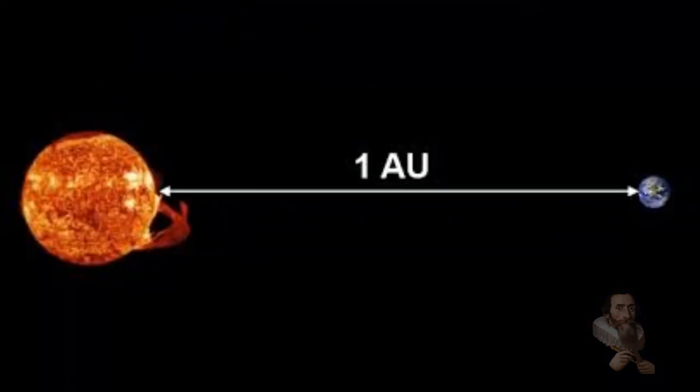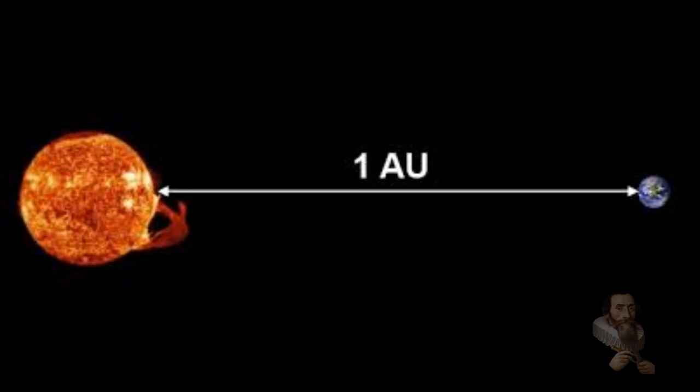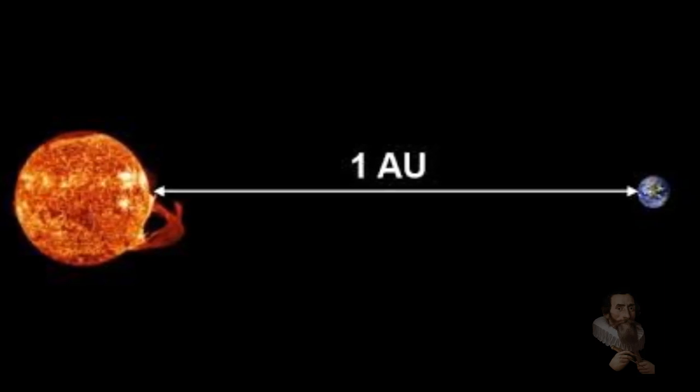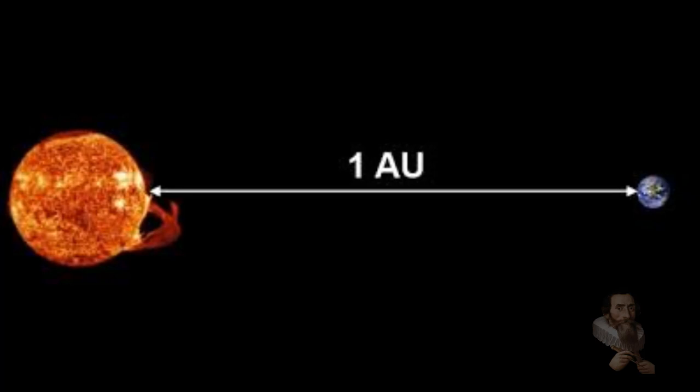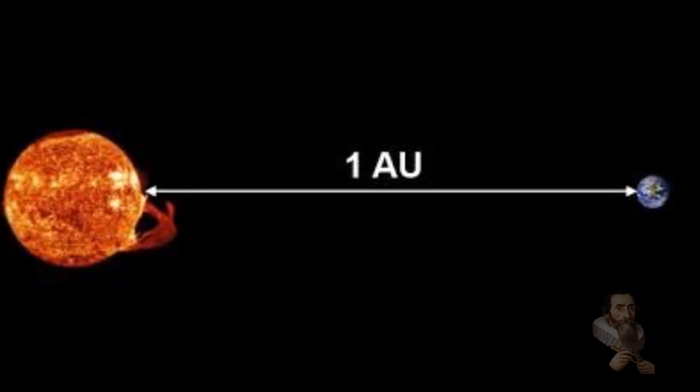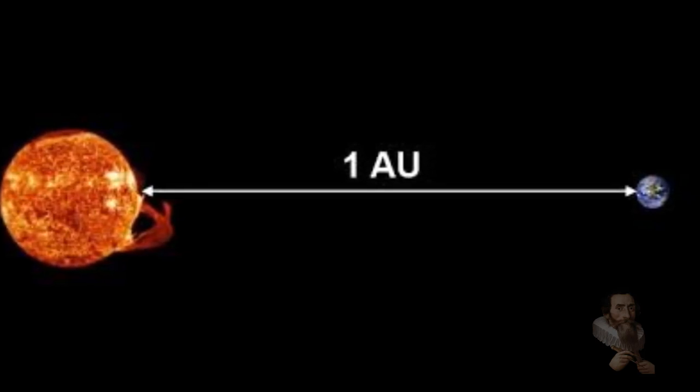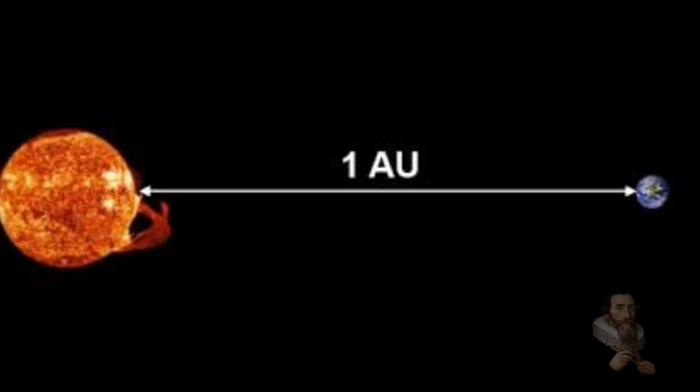The comet is currently about 22 astronomical units from the Sun, and one astronomical unit is the distance between the Earth and the Sun, representing just under 93 million miles, putting it just slightly closer inward than Neptune.